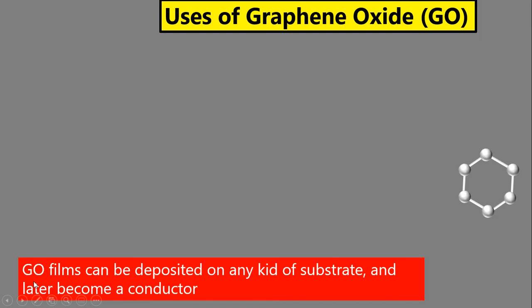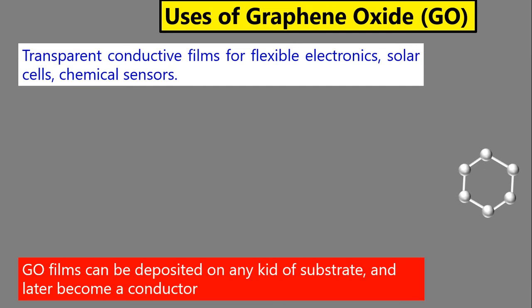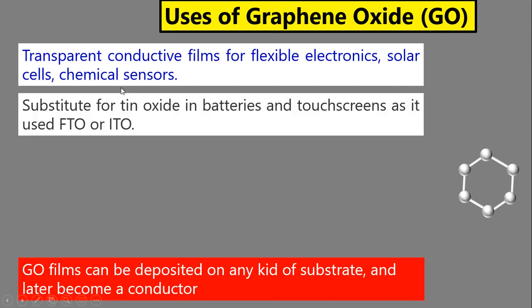Graphene oxide film can be deposited on any kind of substrate and later converted into a conductor. We don't leave it as an insulating graphene oxide film — we convert it into rGO. One key use is as a transparent conductive film for flexible electronics, because graphene's structure is very thin and can show flexibility. It is also used in solar cells and chemical sensors.